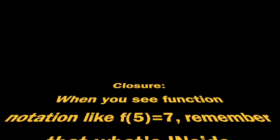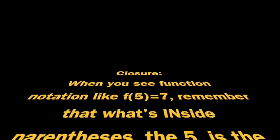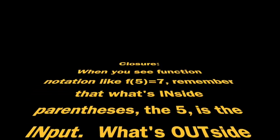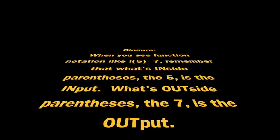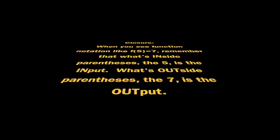All right, there was a lot in this lesson, but one point I really want to hammer home. When you see function notation, like f of 5 equals 7, remember what's inside the parentheses is the input. What's outside the parentheses is the output. If you came away with anything else from this lesson, write it down now. Otherwise, we'll see you next time.